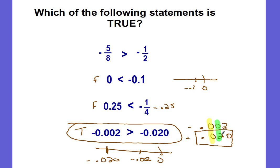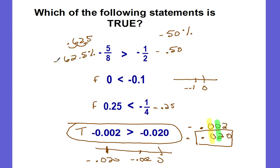This one can get confusing, so be careful. Negative one-half — I know one-half is 50 cents, so it's negative 50 percent. The other value is five-eighths: eight as a denominator means 125 thousandths, so five of them is 625 thousandths, which as a percent is 62.5 — but it's negative. Which one is closer to zero? Negative 50 is closer to zero, so it is the larger one. This statement is false.